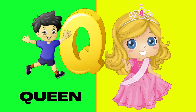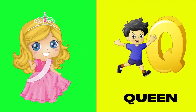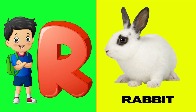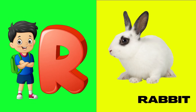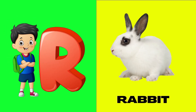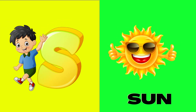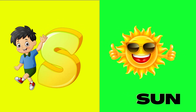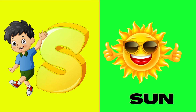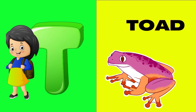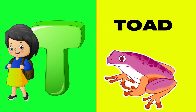Q is for queen, qu-qu-queen. R is for rabbit, r-r-rabbit. S is for sun, s-s-sun. T is for toad, t-t-toad.